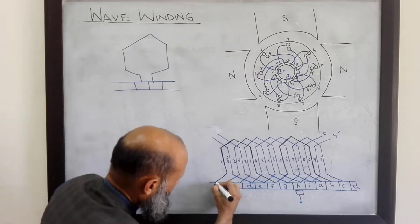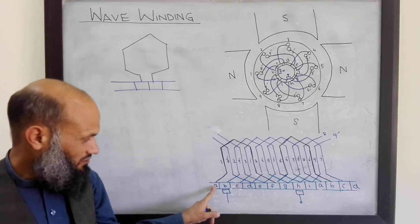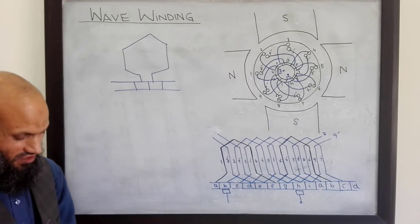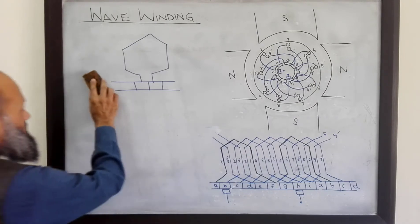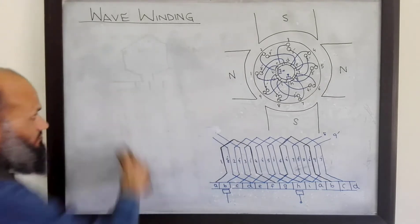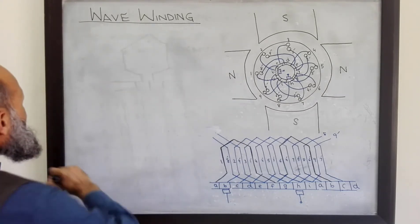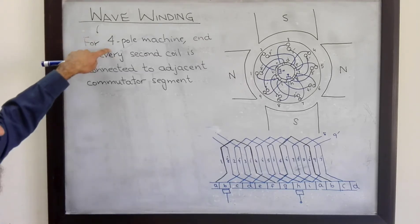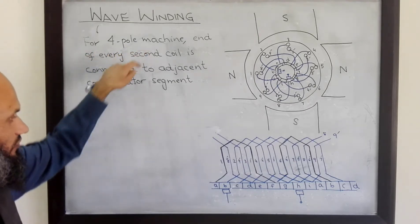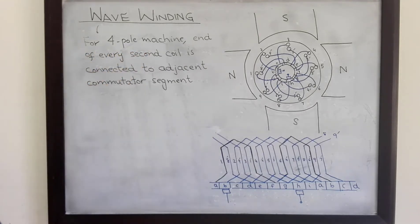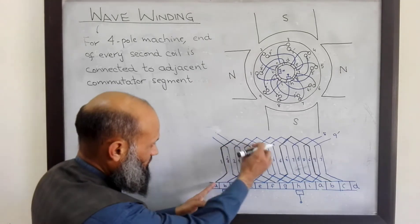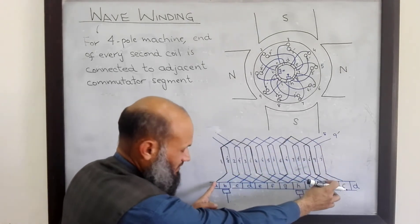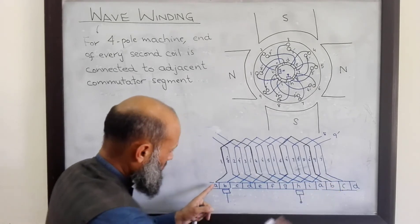This is connected to segment A. And the end of the second coil is connected to commutator segment B. So the arrangement in case of wave winding — in case of wave winding, for a four-pole machine — the end of every second coil is connected to the adjacent commutator segment. This is the first coil, and in series with it is the next coil, and the end of that coil is connected to commutator segment B.